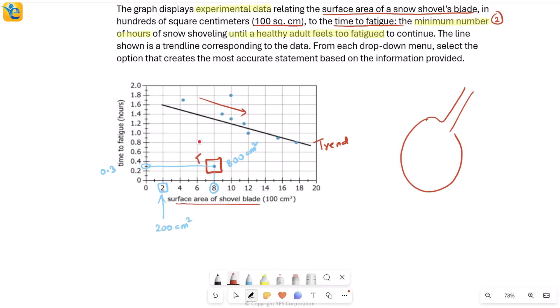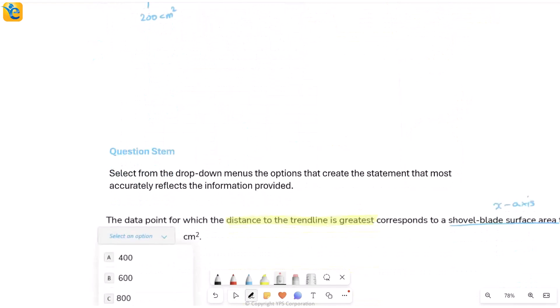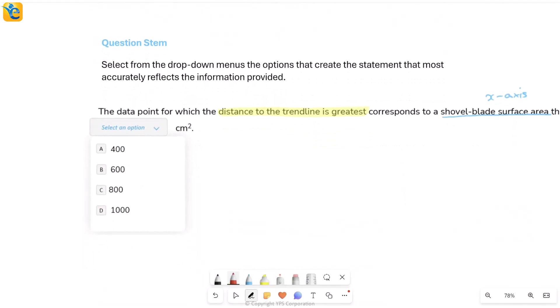For this one, I can see the x value is 8. Don't make the mistake of marking 8 as your answer—it's 800 because that's your unit. The correct answer here is choice C.